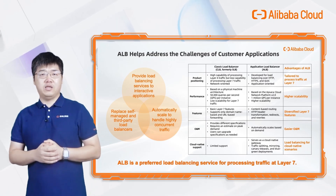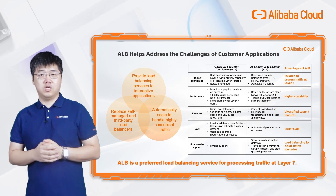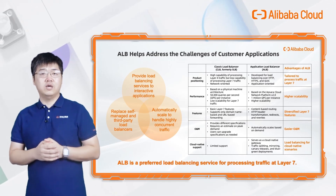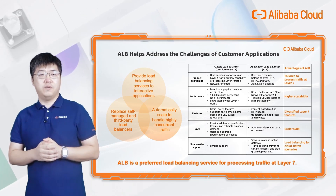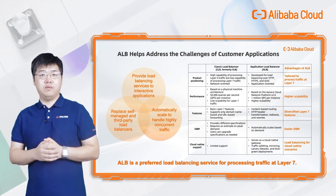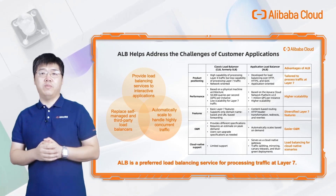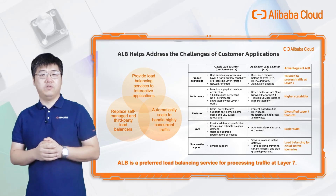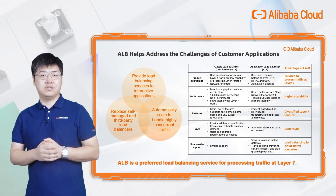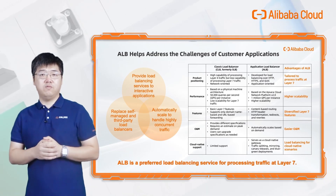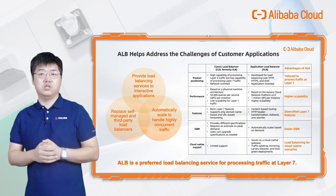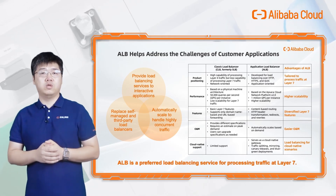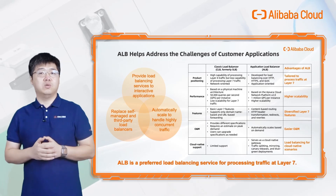ALB provides diversified Layer 7 features such as content-based routing, rewrite, redirect, advanced mirroring, and more. O&M is much easier with automatic scaling up and down and online real-time analysis of Layer 7 access logs. ALB also supports cloud-native scenarios such as Kubernetes and service mesh.